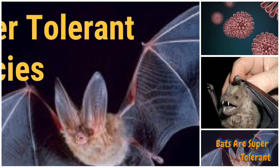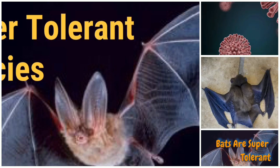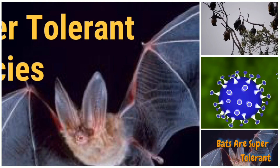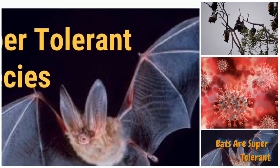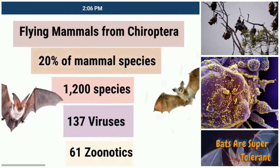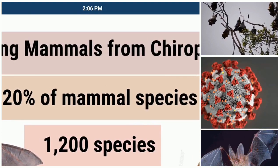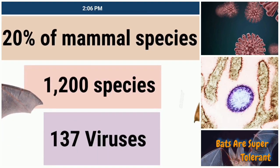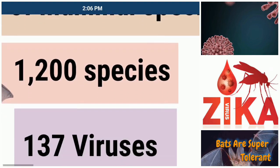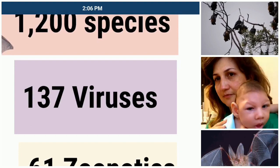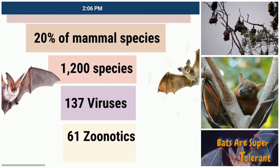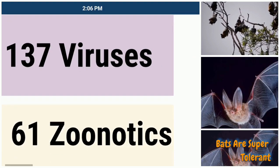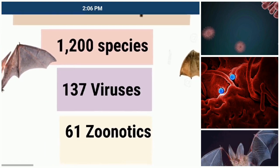There is one important topic concerning coronavirus — the villain of the disease — the super-tolerant species, and that's bats. Bats are flying mammals from the order Chiroptera. About 20% of mammal species belong to bats only, with about 1,200 species existing in the world. About 137 viruses live in the bodies of bats, and out of those, 61 viruses in bats are zoonotic, meaning they are transmitted to human beings to cause different kinds of diseases.